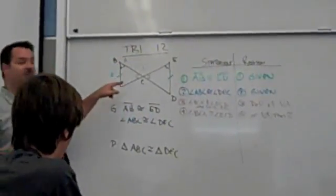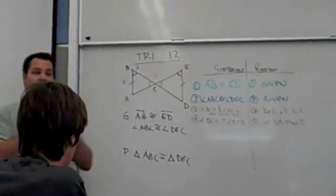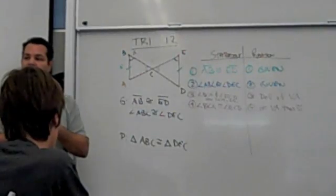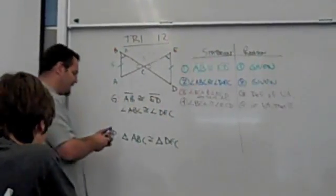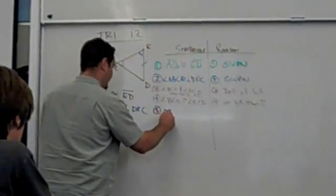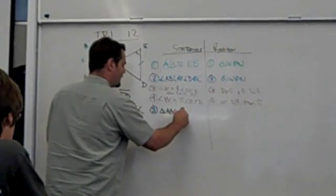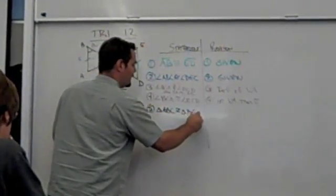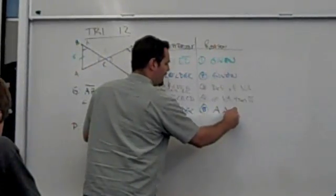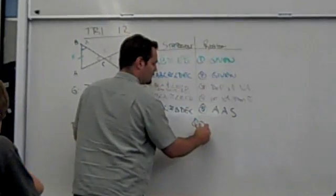So AAS is what we've got. And it's working from both sides, which is what we look for. Is AAS one of the theorems that proves two triangles are congruent? Yes. It is. So that gives us license to then say what we're trying to say here. Triangle ABC is congruent to triangle DEC. And what's my reason? AAS. Done.